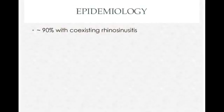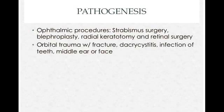That's why about 90% of people who come in with orbital cellulitis have a coexisting rhinosinusitis. Other causes include surgery — strabismus surgery, blepharoplasty, radial keratotomy, and retinal surgeries can introduce bacteria into that space. Trauma with a fracture, dacryocystitis, infection of the teeth or middle ear can also cause infections that extend into the orbit.